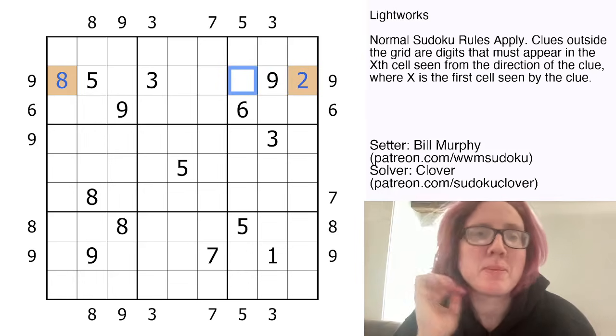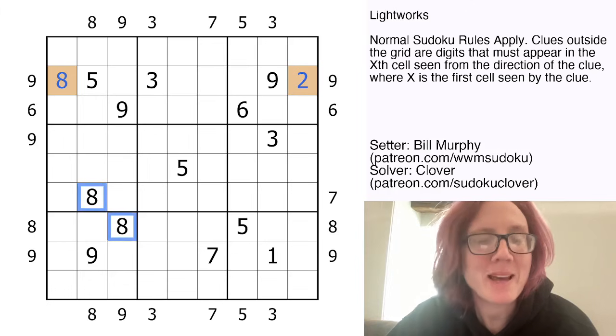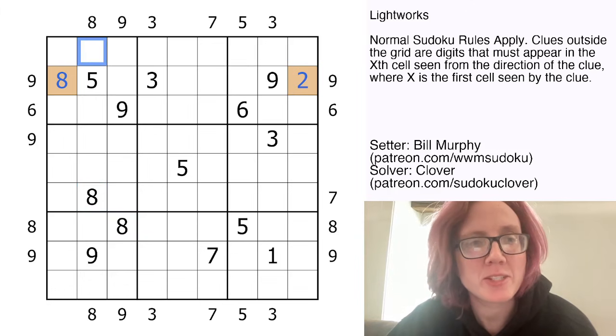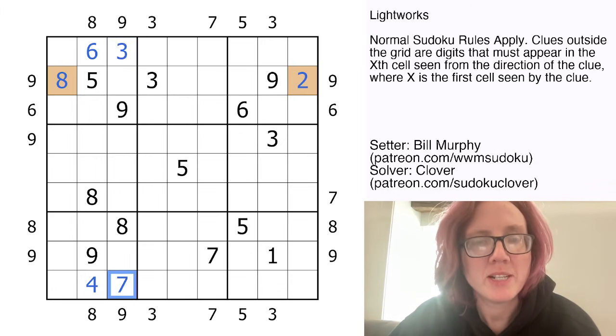And we actually get to start this puzzle by filling in a lot of these numbered rooms clues, just by hunting and packing and finding these digits. So 8 here is in the 6th position from this direction, and the 4th from this direction. 9 is in the 3rd position from here, and the 7th position from here. 3 is in the 2nd position from here, and the 8th from here. 7 is in the 8th position from here, and the 2nd from here. 5 is in the 7th position from here, and the 3rd from here.